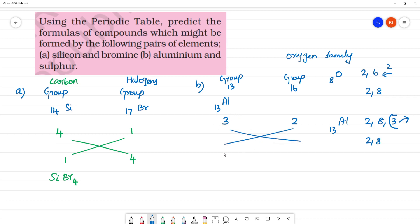So, here we cross multiply. 2, 3. Aluminium is 2, sulphur is 3. Al2S3.